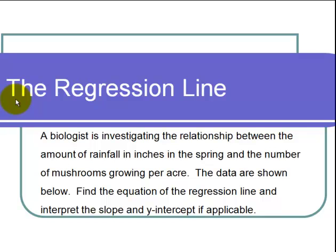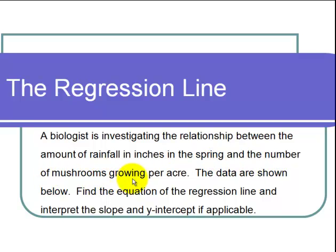This is a video on the regression line. The question states: a biologist is investigating the relationship between the amount of rainfall in inches in the spring and the number of mushrooms growing per acre. The data are shown below. Find the equation of the regression line and interpret the slope and y-intercept if applicable.